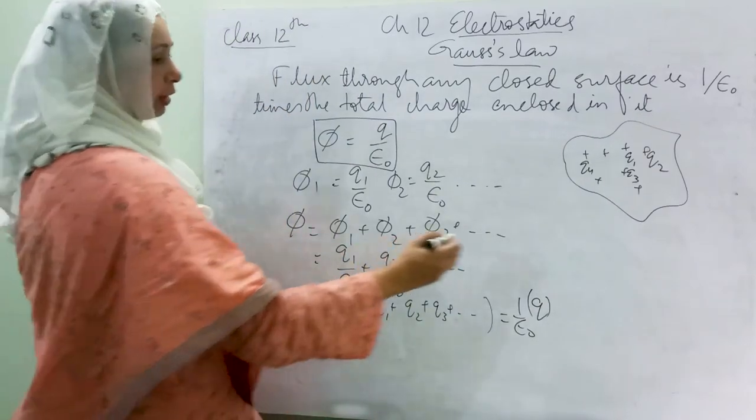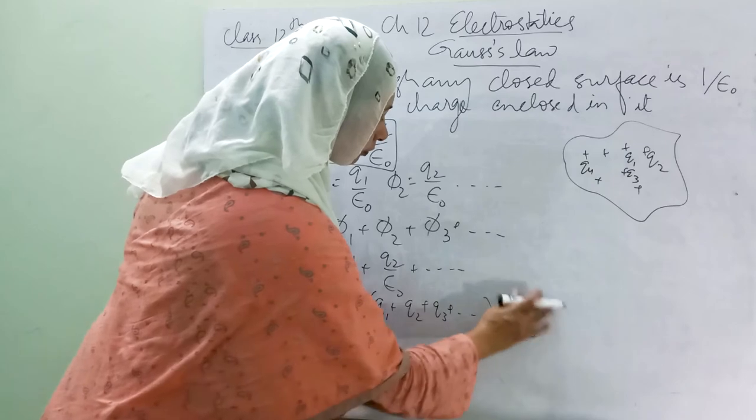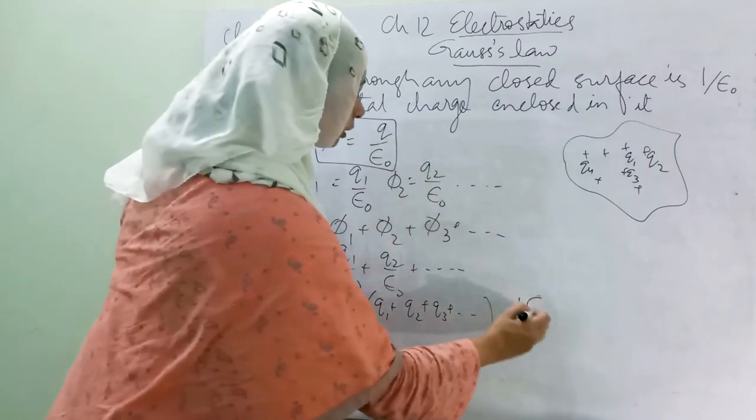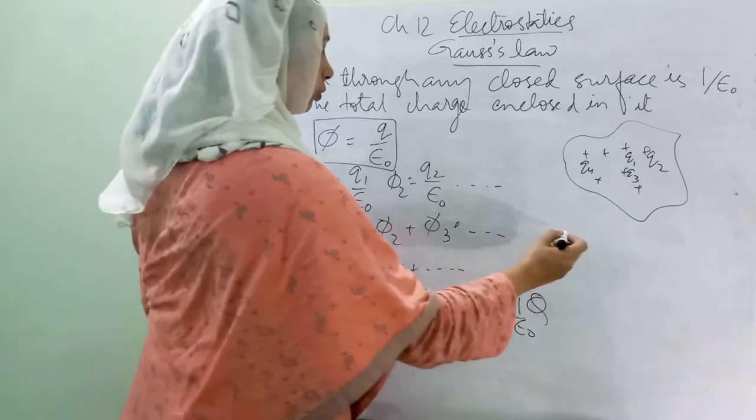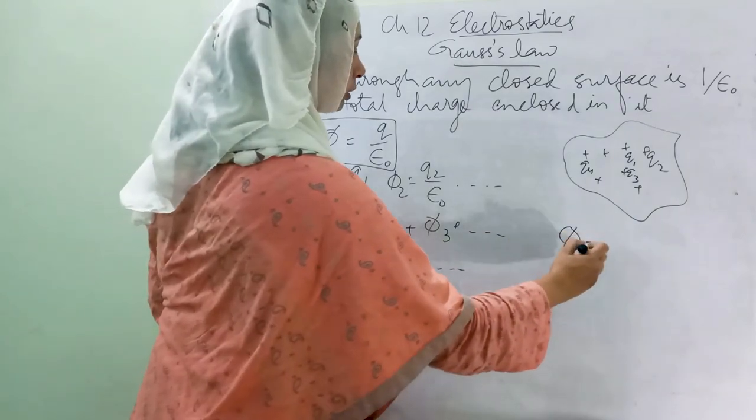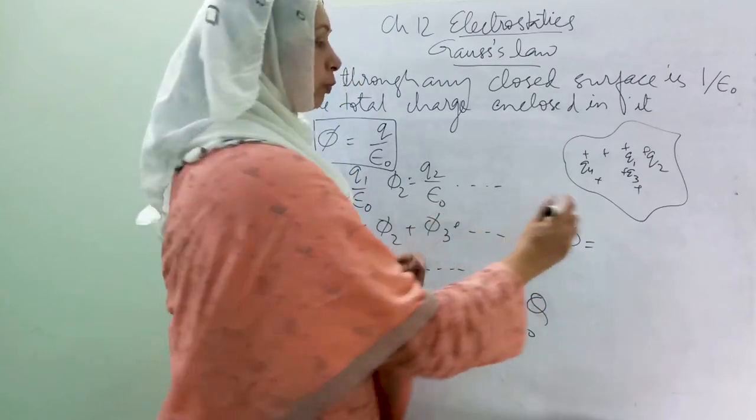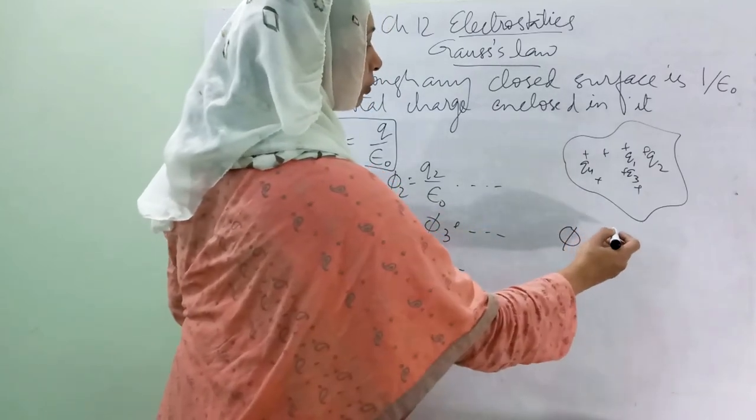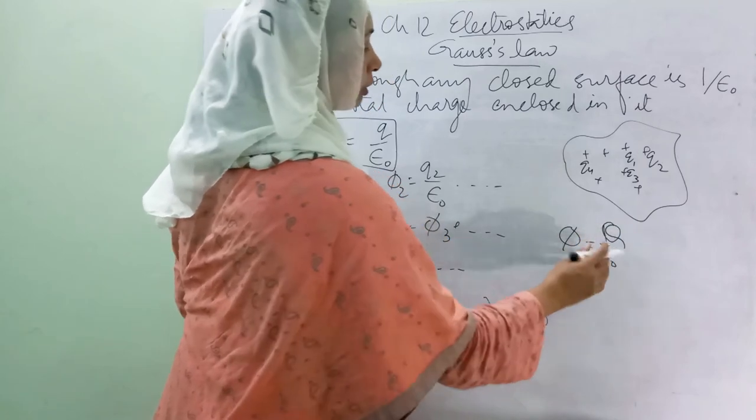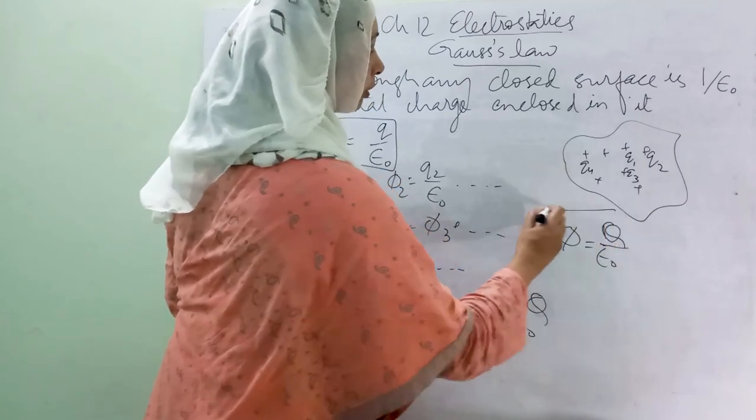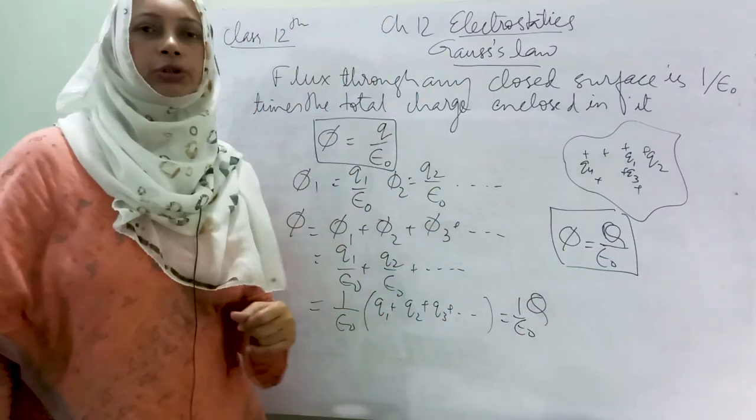And finally I get capital Q. So this formula is for one point charge, and the total flux through a closed surface which is enclosing a number of point charges is equal to 1 over epsilon naught times the total charge in it. This formula is called Gauss's Law.